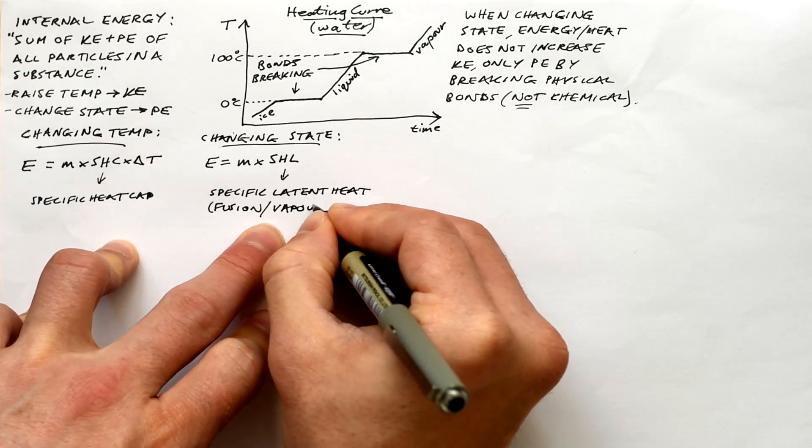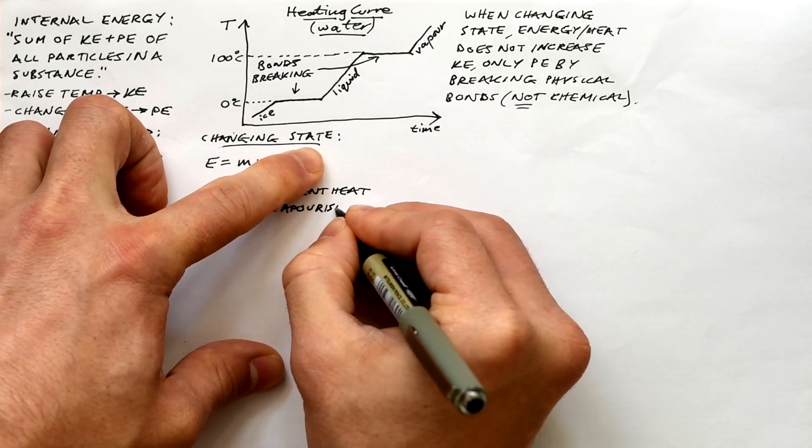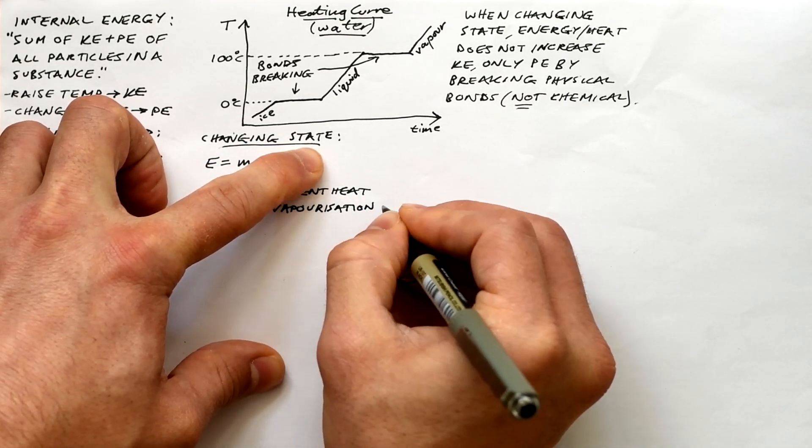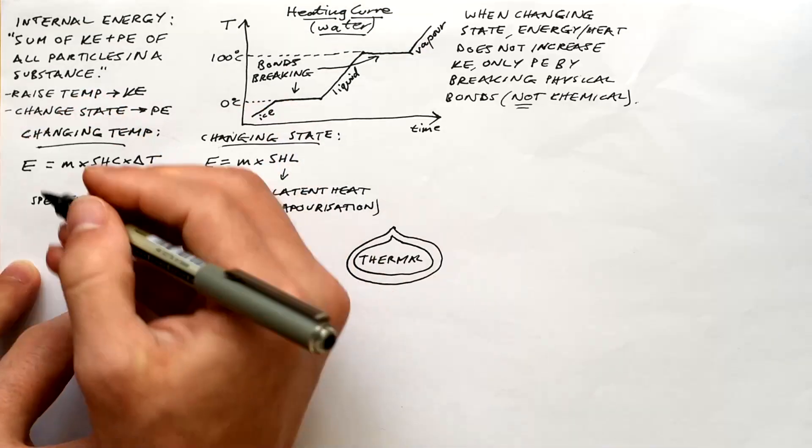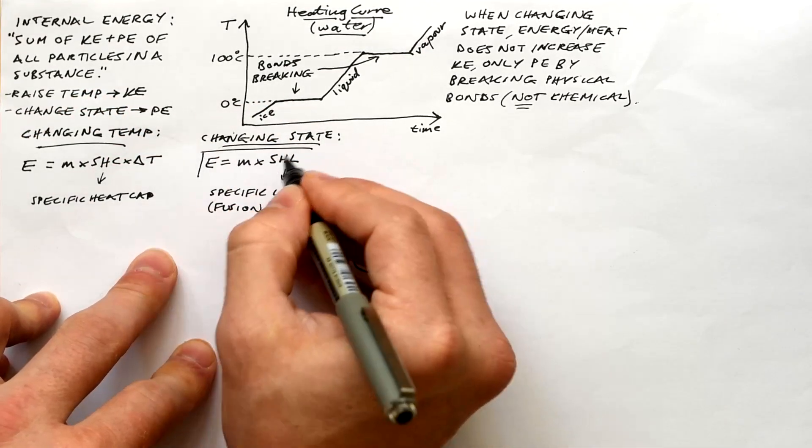There are two different specific latent heats. You have the specific latent heat of fusion and of vaporization. First is for melting and freezing. Second one is for obviously evaporating and going backwards condensing as well.